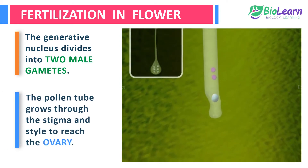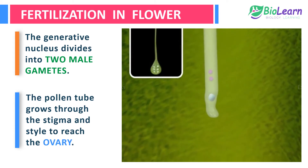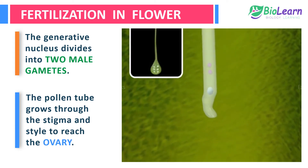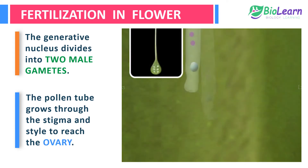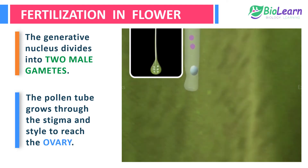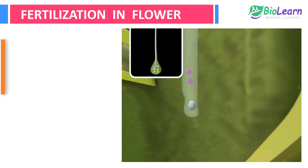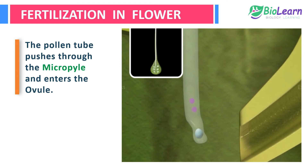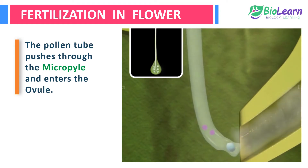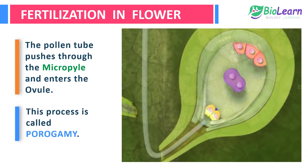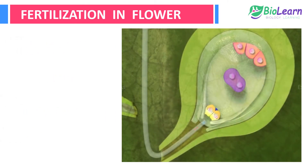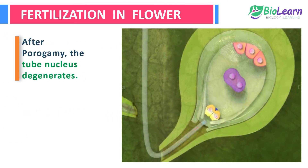The pollen tube grows through the stigma and style by dissolving the tissues with the help of enzymes to reach the ovary. Here the pollen tube pushes through the micropyle and enters the ovule. This process is called porogamy.